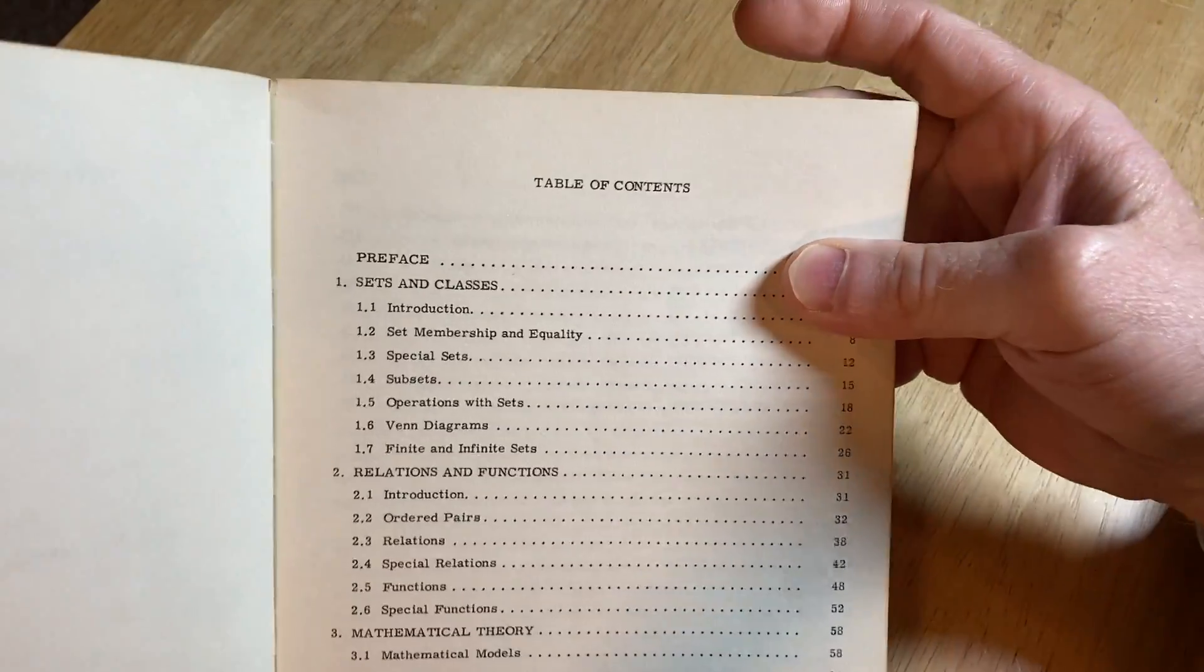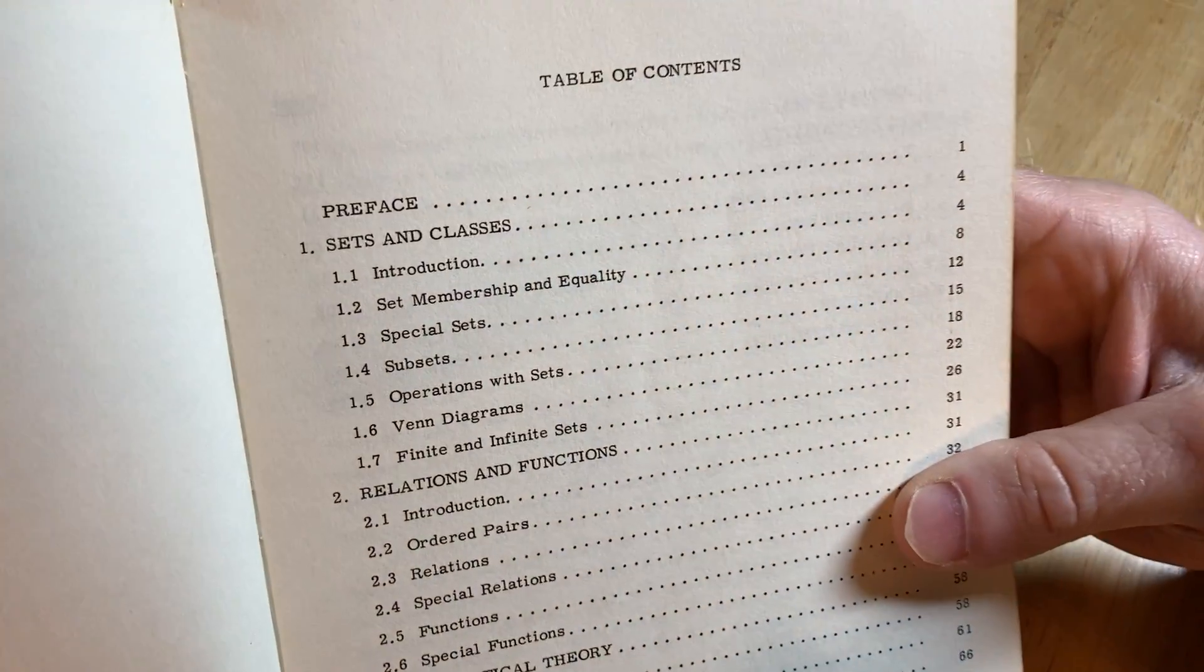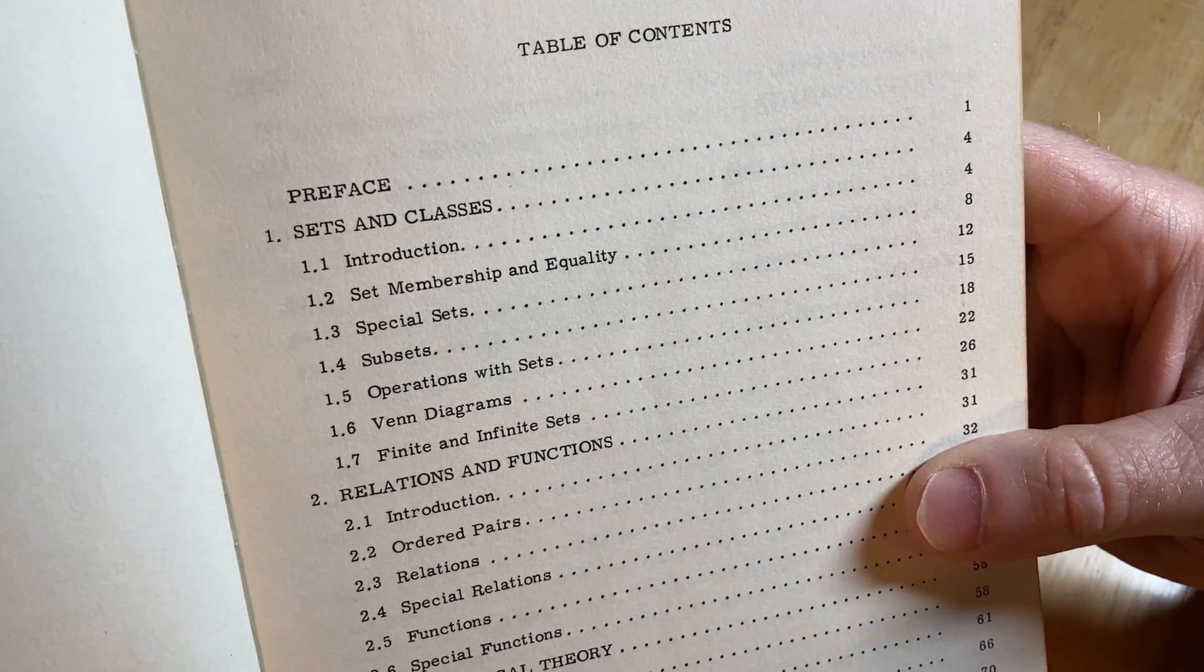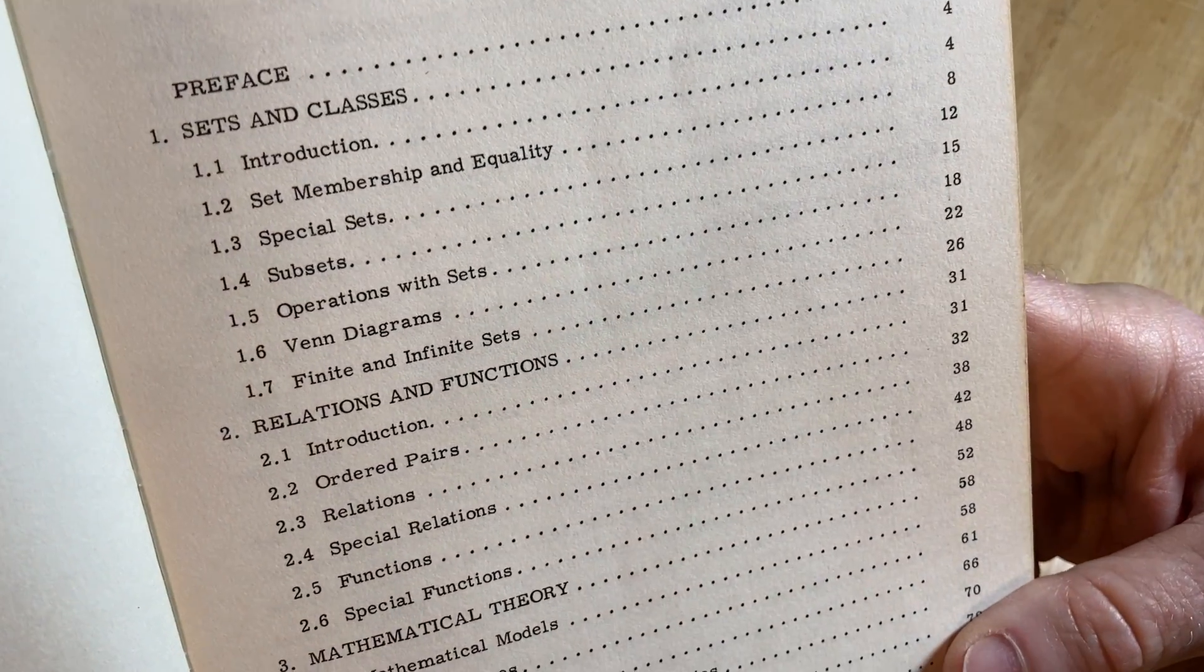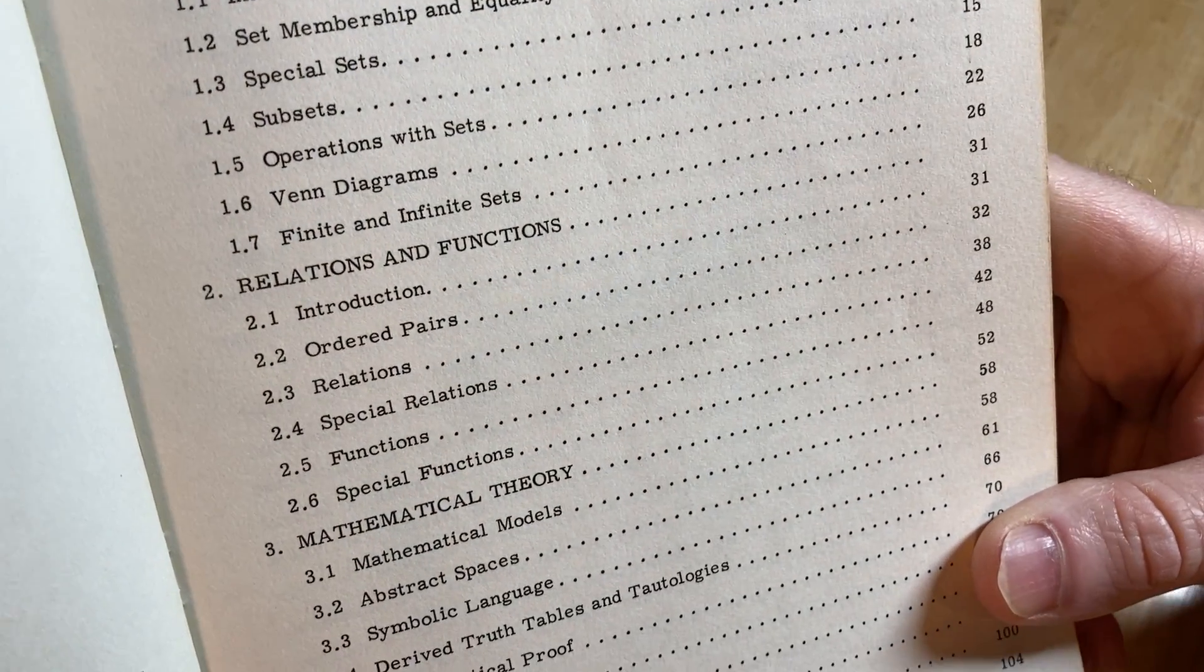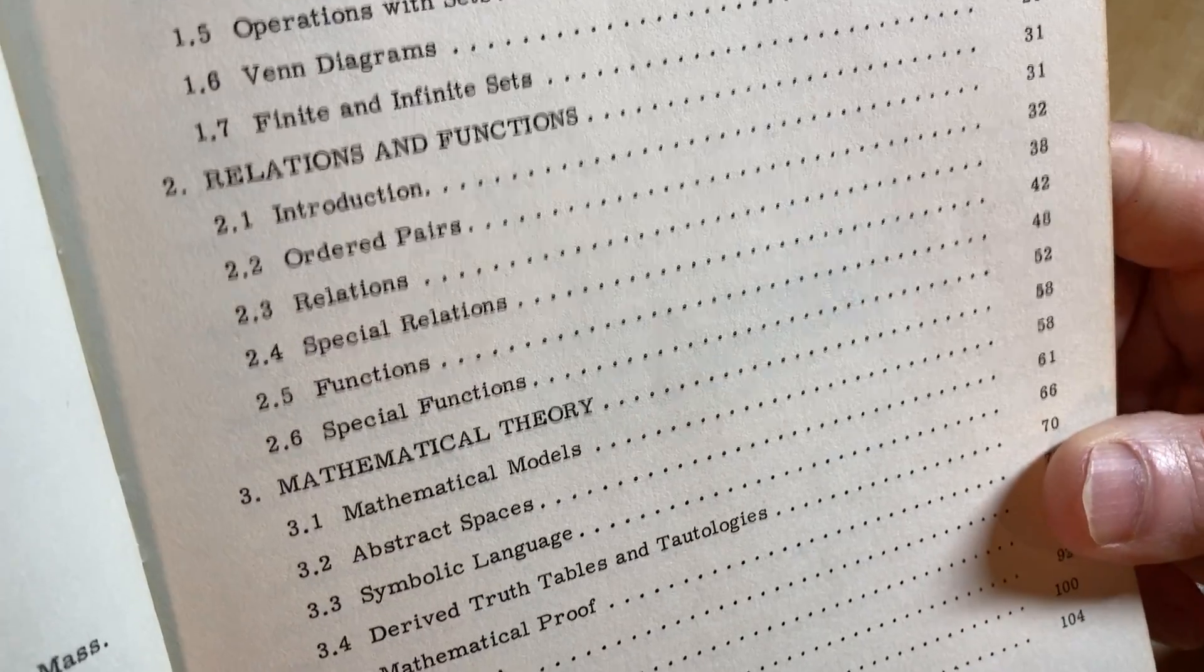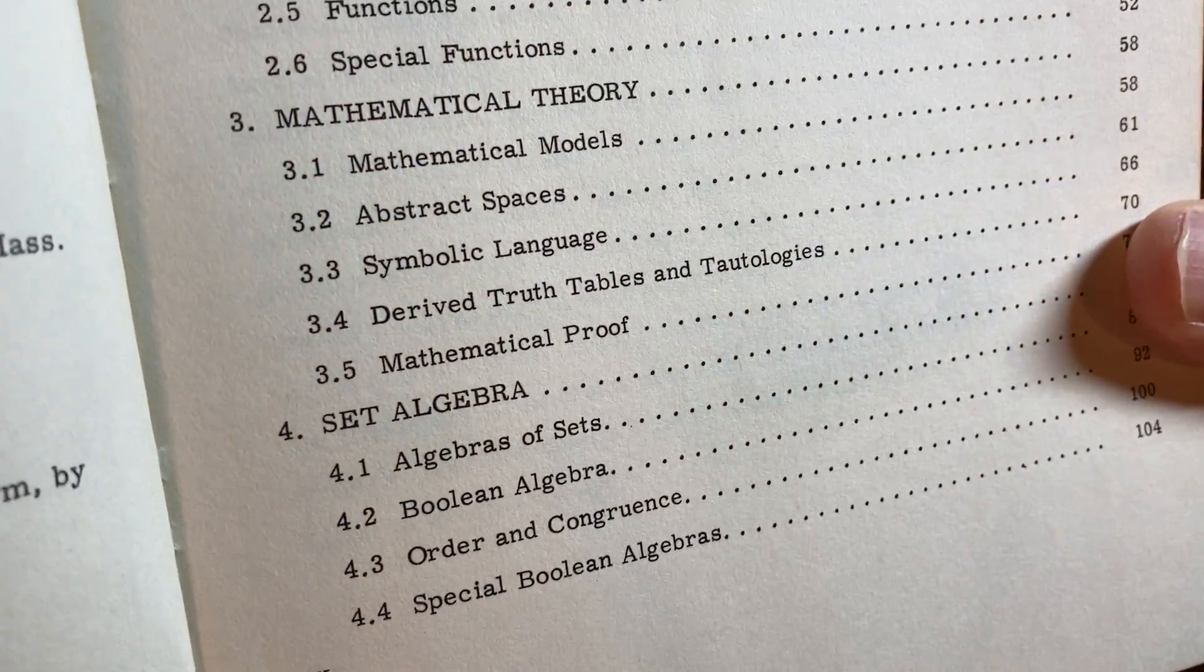And then here's the Table of Contents. Sets and Classes, so it's Set Theory, Relations and Functions, Mathematical Theory, Set Algebra, cool, right? All kinds of cool mathematics in here.